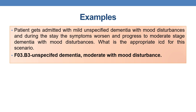Let us see an example. A patient is admitted with mild unspecified dementia with mood disturbances. During the stay, symptoms worsen and progress to moderate stage — moderate dementia with mood disturbances. The final code should reflect the higher severity. Mild unspecified dementia progressing to moderate unspecified dementia: the appropriate code is F03.B3 — unspecified dementia moderate with mood disturbances. This comes under inpatient guidelines.